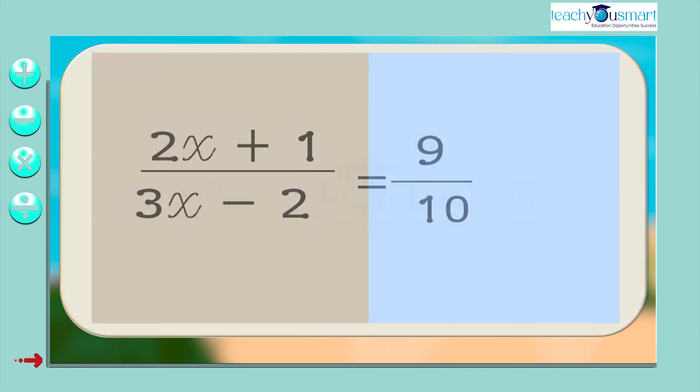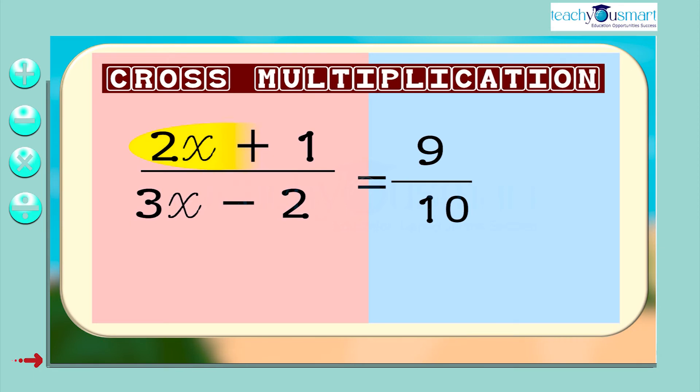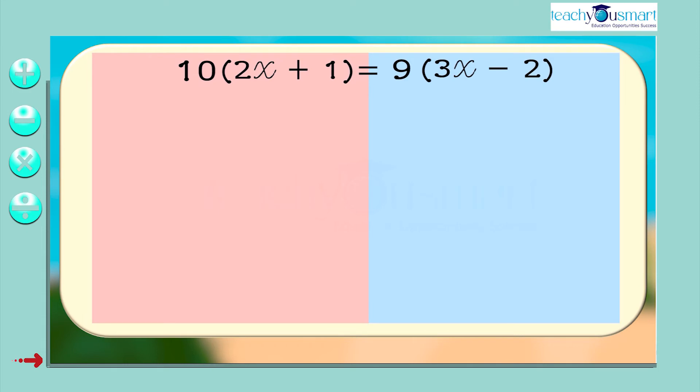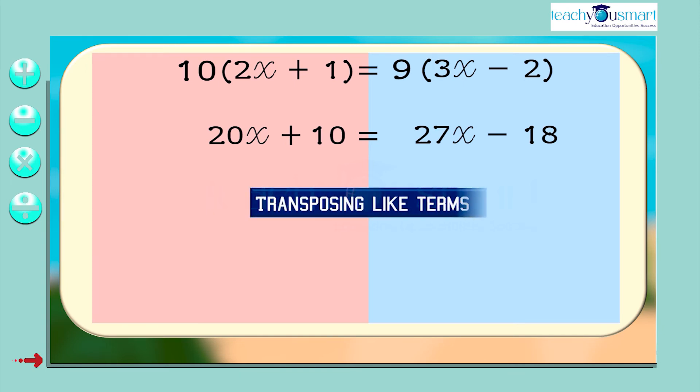Similarly, in 2x plus 1 divided by 3x minus 2 equals 9 by 10, by applying the cross multiplication method, we get 10 multiplied by 2x plus 1 equals 9 multiplied by 3x minus 2. That is, 20x plus 10 equals 27x minus 18.